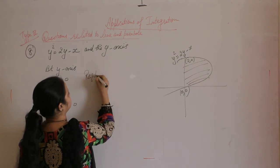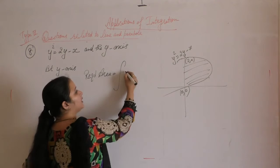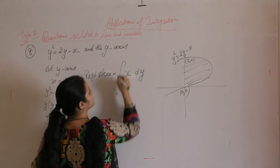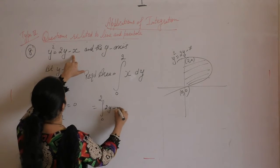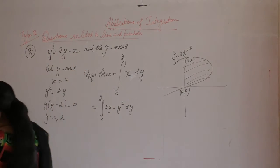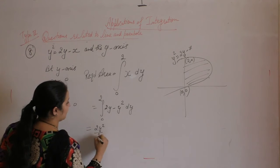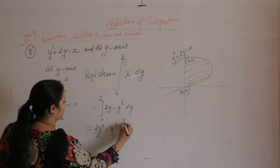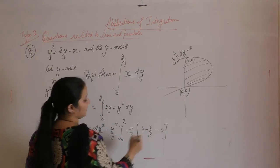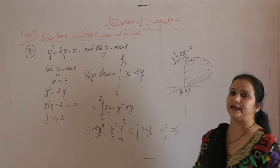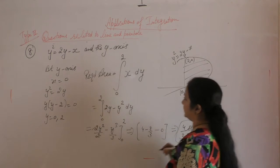The required area equals ∫x dy with limits of y from 0 to 2. The value of x is 2y − y², so the integral becomes ∫(2y − y²) dy from 0 to 2. Integrating: y² − y³/3, evaluated from 0 to 2 gives 4 − 8/3 = (12 − 8)/3 = 4/3 square units.